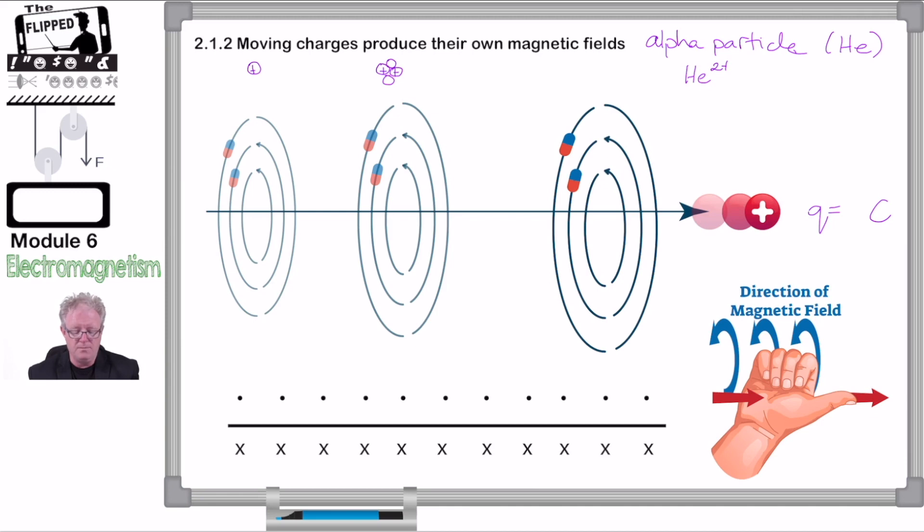So what we do is we write that like this. We go, okay, we've got a helium, and then we write a 2 plus. So that's one way of writing it. We can write a particle like that, an alpha symbol, and write 2 plus. That's another way of writing it. We could also write, okay, we've got 4, 2, and then helium with a 2 plus.